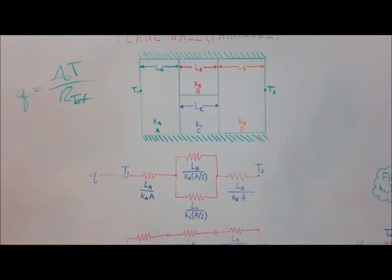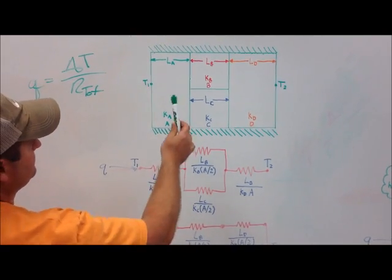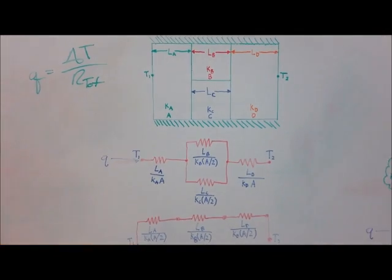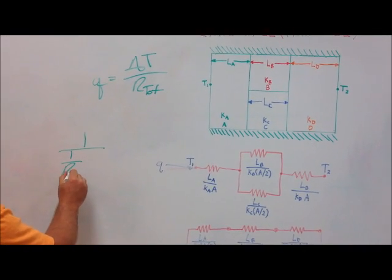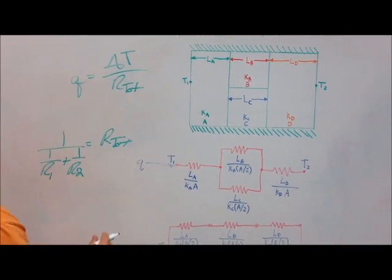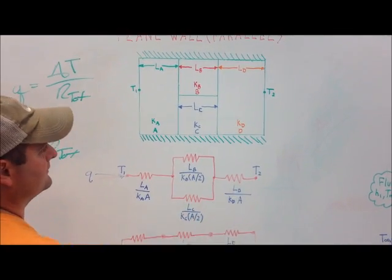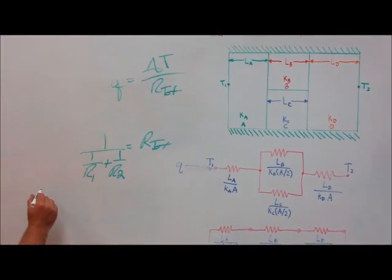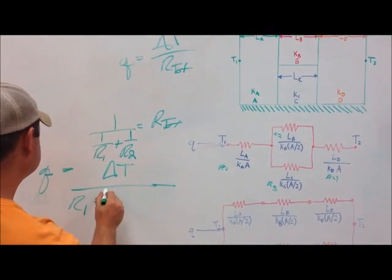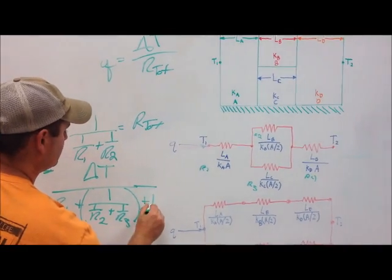Looking at the thermal circuit, heat travels from T1 to T2. You get the first conductive resistance, then you reach mediums 2 and 3, which are in parallel. For parallel resistances, as with electrical circuits, you write 1/R2 + 1/R3 to get R_parallel. Then continuing, you have the conductive resistance of medium D in series. The full equation is Q = ΔT / (R1 + 1/(1/R2 + 1/R3) + R4).